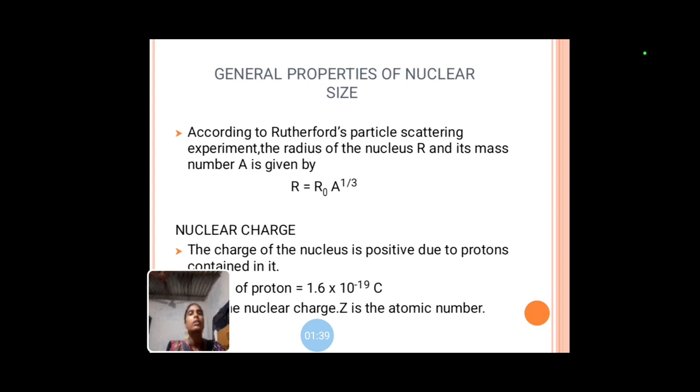Nuclear charge. The charge of the nucleus is positive due to the protons contained in it. Charge of proton is 1.6 × 10^(-19) C. Z is the nuclear charge, Z is the atomic number.